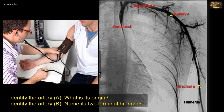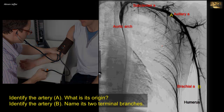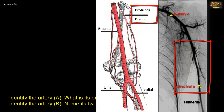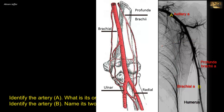Also note that arising from the brachial artery and passing posteriorly, obliquely downwards and laterally, is the profunda brachii artery — the artery that accompanies the radial nerve in the spiral groove.